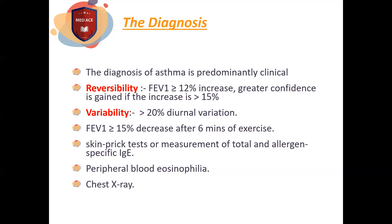Variability: the patient uses a peak expiratory flow rate device in the early morning and in the evening. If there is a variability of 20% or more — a difference between early morning and evening readings — this is diagnostic of asthma.